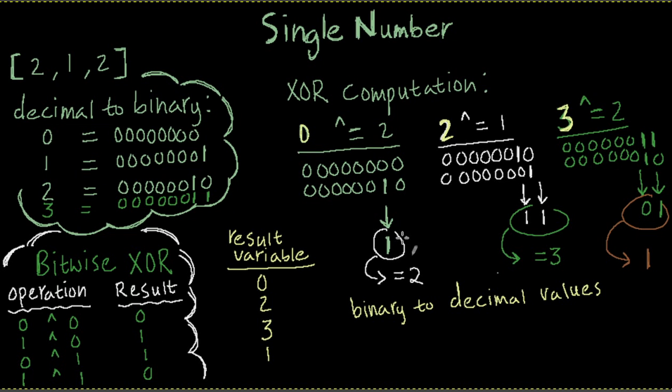And that 1 is a binary format. So that 1 equals to a 2 in our decimal number system. Okay? So we get the value 2, which would now be stored in our result variable. So now result equals to 2. Why? Because again, 0 XOR with anything results in itself, which is 2.